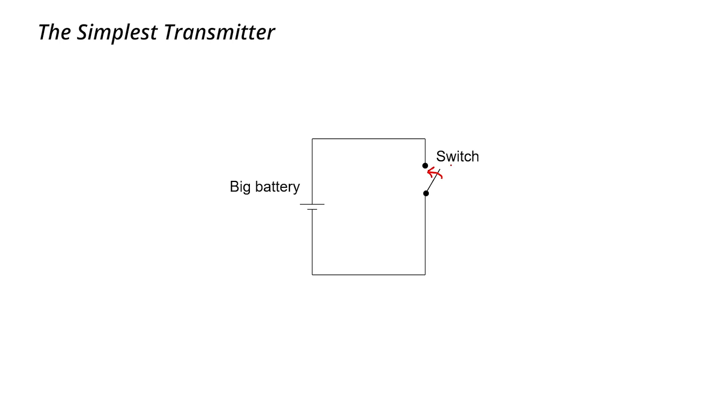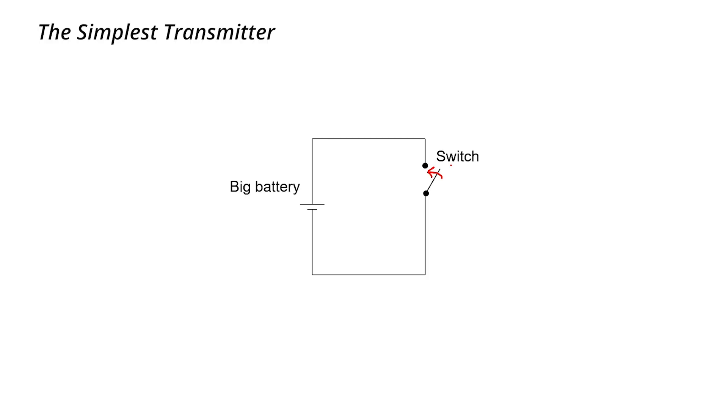When the switch is closed, then electrons have to increase their velocity from zero up to their terminal velocity as they move through the wire. Once the switch stays closed long enough, there will eventually be a constant flow through the wire because the wire has a finite resistance and the battery has a finite amount of current that it can output. The electrons are only accelerating for a short period of time as they accelerate from zero up to that terminal velocity.